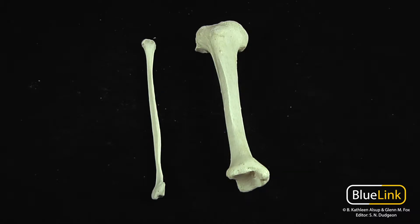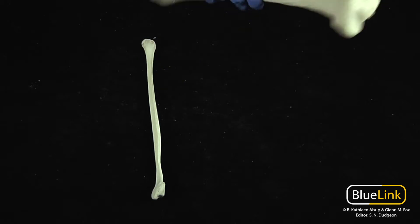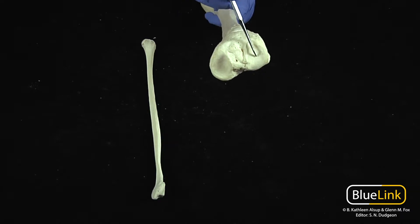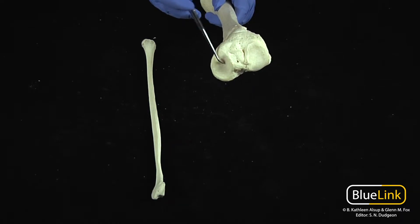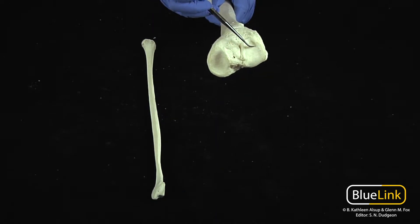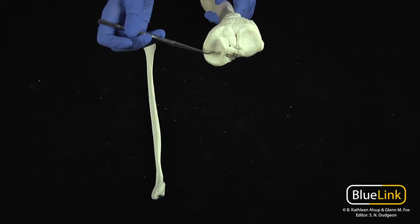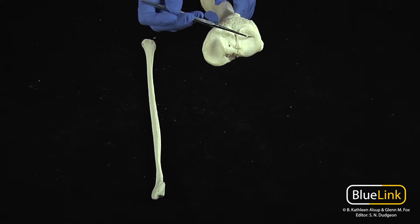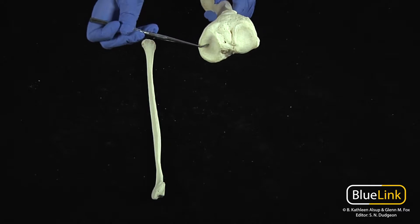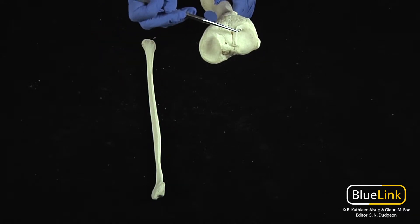Now we're going to focus on the proximal end of the tibia. This is going to be important in terms of forming the knee joint. I'm going to flip this over so we can see a proximal view. You see two shallow condyles here — these are concave areas on the proximal superior portion. These are going to articulate with the femoral condyles. The medial is generally going to be larger than the lateral. And during life you're going to have fibrocartilaginous menisci that are going to sit right in this area.